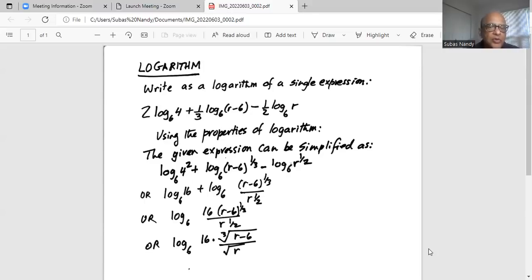This is a property of logarithm. The next term the coefficient one third becomes the exponent of r minus 6. Again, application of rules of logarithm minus the coefficient half in the third term becomes the exponent of r.